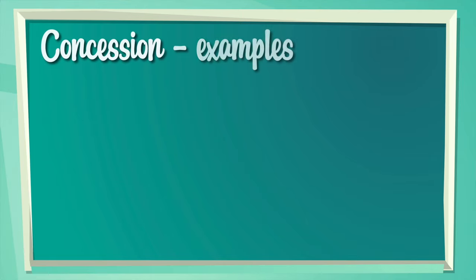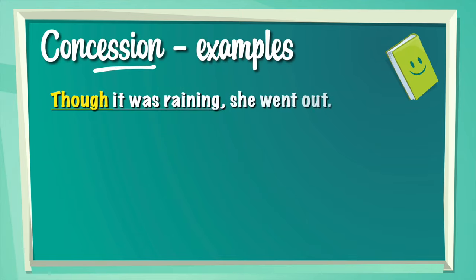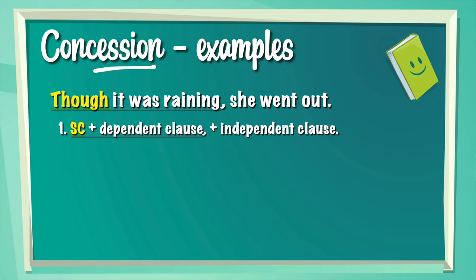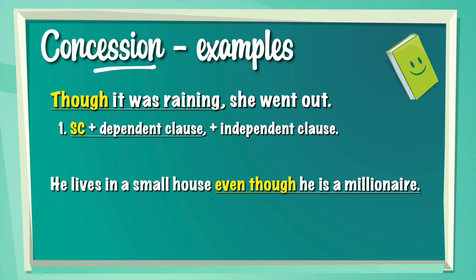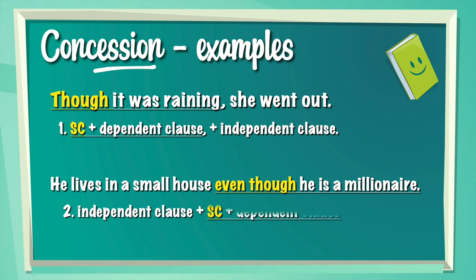Let's look at concession examples. 'Though it was raining, she went out.' We have the subordinating conjunction plus the dependent clause, then a comma, then the independent clause — she went out. 'He lives in a small house, even though he's a millionaire.' Here we have the independent clause first, then the subordinating conjunction 'even though', then the dependent clause.